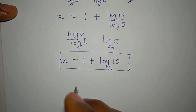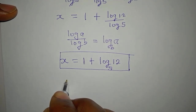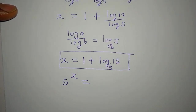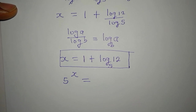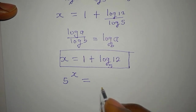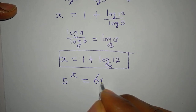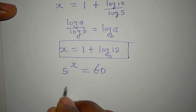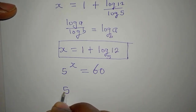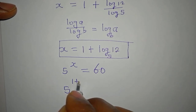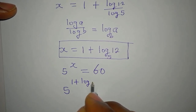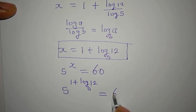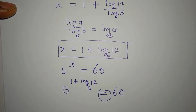Now let's put this back into the original equation to verify. The original equation is 5 to the power of x equals 60. In place of x I'm going to write the whole expression, so I will have 5 to the power of 1 plus log 12 to base 5. Now, will this give us 60? That's what we want to find out.